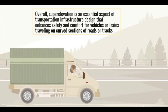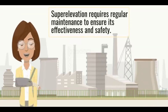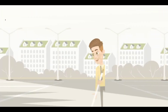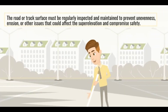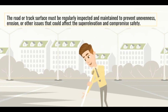Overall, super elevation is an essential aspect of transportation infrastructure design that enhances safety and comfort for vehicles or trains traveling on curved sections of roads or tracks. The road or track surface must be regularly inspected and maintained to prevent unevenness, erosion, or other issues that could affect the super elevation and compromise safety.